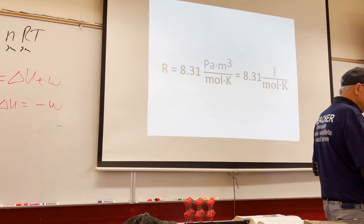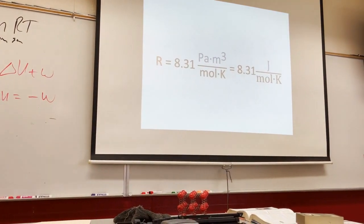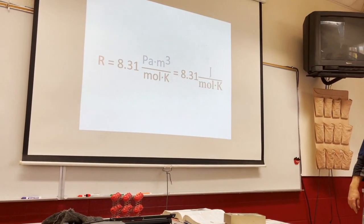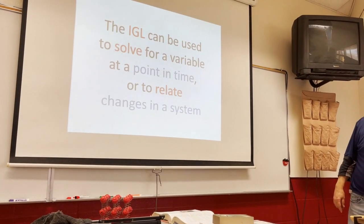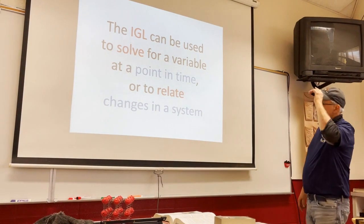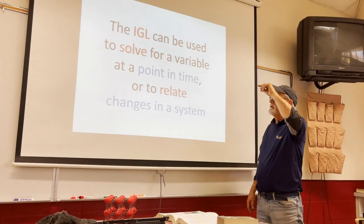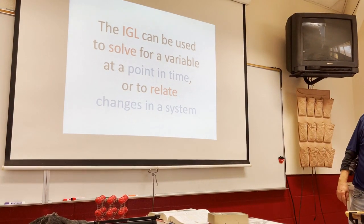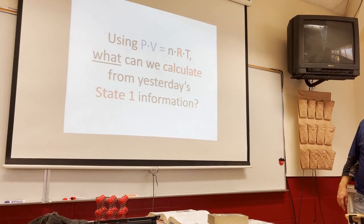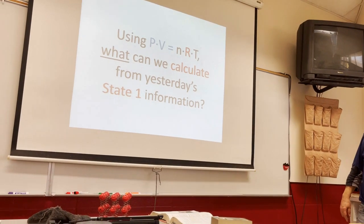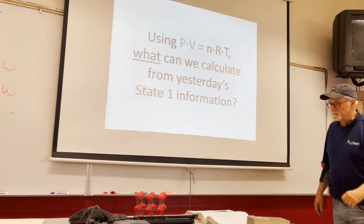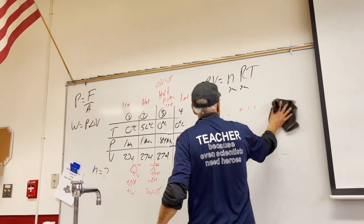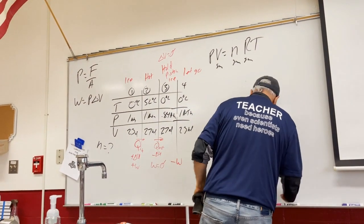That joules-per-mole-Kelvin form tells us something about the energy of the system we can derive from the ideal gas law. The ideal gas law can be used for a single state at a point in time or to relate changes in a system. From yesterday's state one information, we could calculate the number of moles.